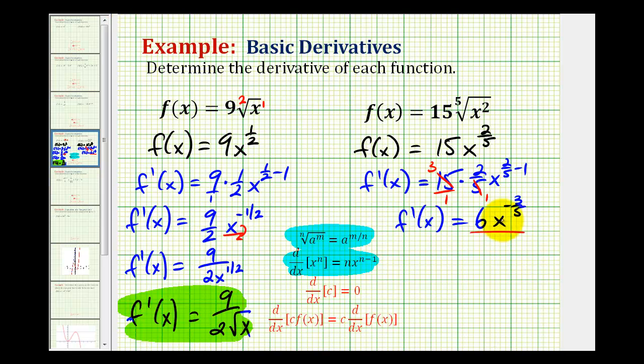We'll first simplify by moving x to the negative three-fifths down to the denominator, which will change the sign of the exponent. So we have f prime of x equals six stays in the numerator. We have x to the three-fifths in the denominator.